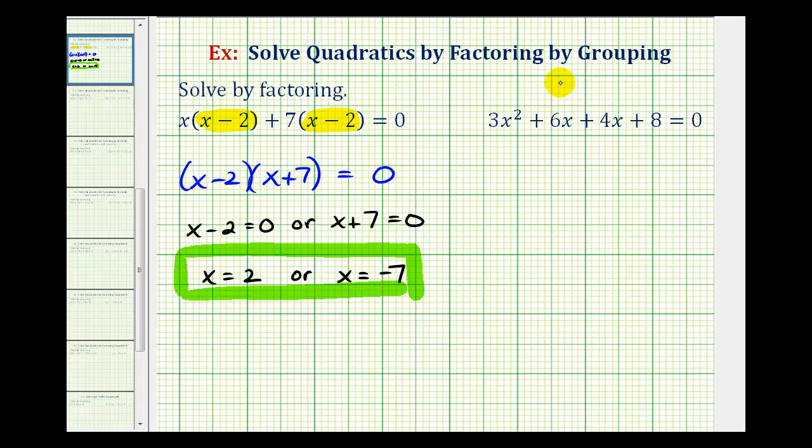But normally, factor by grouping is used when we have four or six terms. So to review the factor by grouping technique, we start by dividing the polynomial in half. And then we factor out the greatest common factor of these two terms on the left and then factor out the greatest common factor of these two terms on the right. And what we're hoping for is that we'll have a common binomial factor like we were given in the first example.